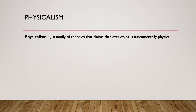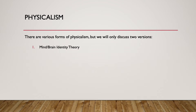Physicalism is a family of theories that claims that everything is fundamentally physical. The first form we'll discuss is the mind-brain identity theory, which says your mind just is your brain — a very complex physical object. The things that happen in your mind, like the pains you feel, the beliefs you have, the desires you have, are just specific states of your brain: certain patterns of neurons firing.